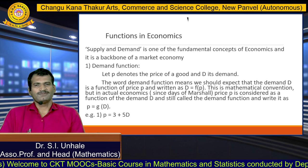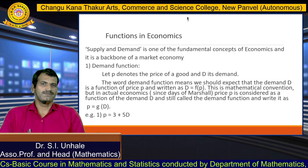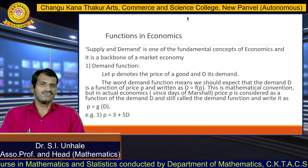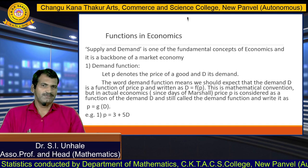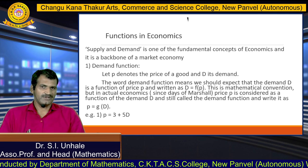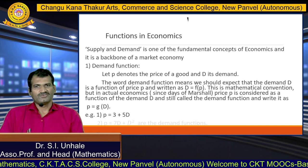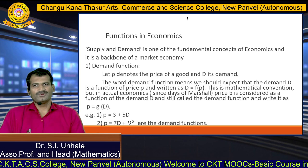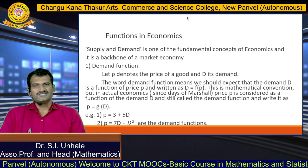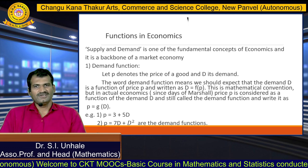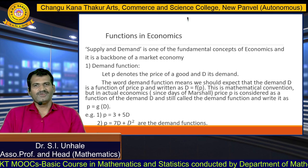Similarly, we can see some examples. If p is the price and d is the demand, then p equals 3 plus φd. Here 3 is a constant, φ is also a constant, d is the demand, and p is the price. p depends on demand d, so p is the dependent variable and demand d is the independent variable — this is a demand function. Another example: p equals 7d plus d² is also a demand function, where 7 is a constant, d is the demand, and p is the price.